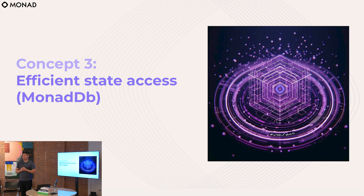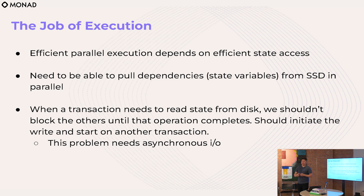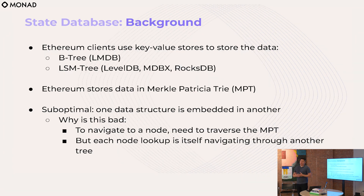The third ingredient is efficient state access, or what we call MonadDB. Going back to the parallel execution problem: we're running transactions in parallel, each one surfacing dependencies and pulling them from SSD. When we implemented our parallel execution algorithm at Monad, we realized pretty quickly that the actual bottleneck is state access. We have a whole bunch of different account-slot tuples needing to read from SSD, and by default Ethereum's software stores all of these inside a commodity database — LevelDB in Ethereum's case, RocksDB in Solana's case.